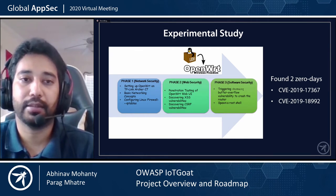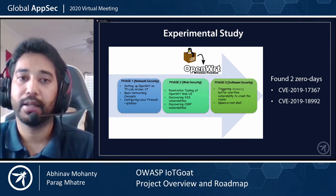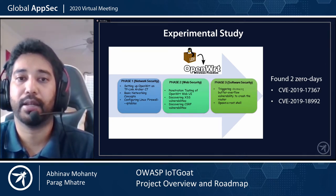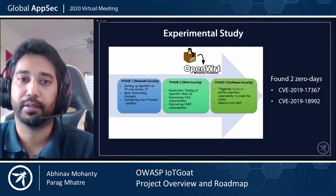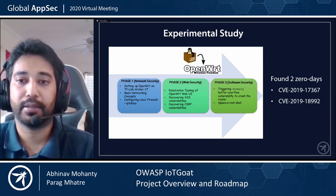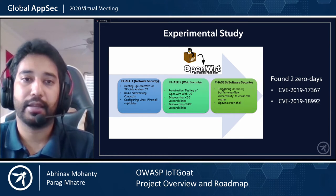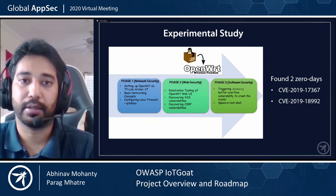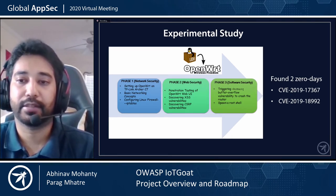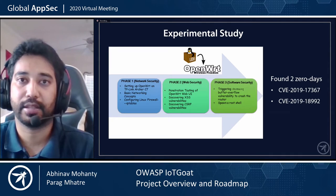In the second phase, students were divided into groups and required to do penetration testing of the OpenWrt web UI. The third phase was software security, where students were required to exploit a DNS Masq buffer overflow vulnerability and obtain a root shell. In designing the project, we discovered multiple zero-day cross-site scripting and cross-site request forgery vulnerabilities in OpenWrt and included those in IoT Goat as well. The vulnerabilities were reported to the OpenWrt security team and got fixed. This case study provides good evidence that IoT Goat can be highly efficient in teaching penetration testing skills in a classroom environment.